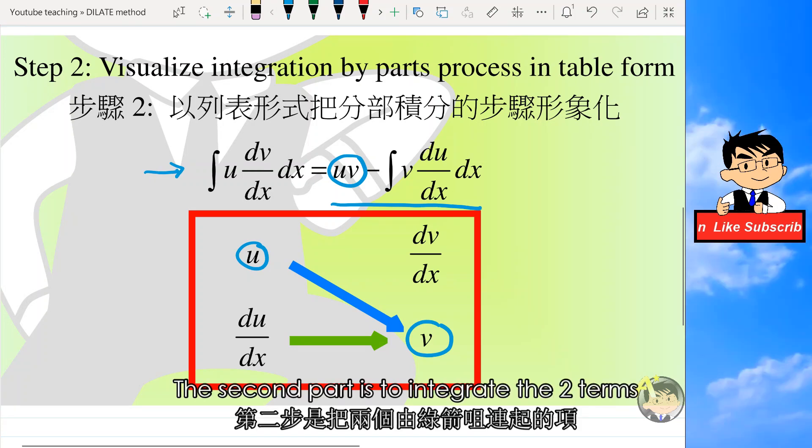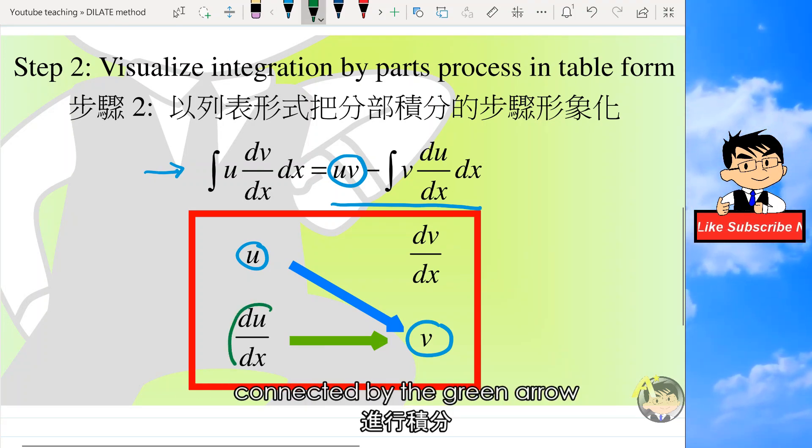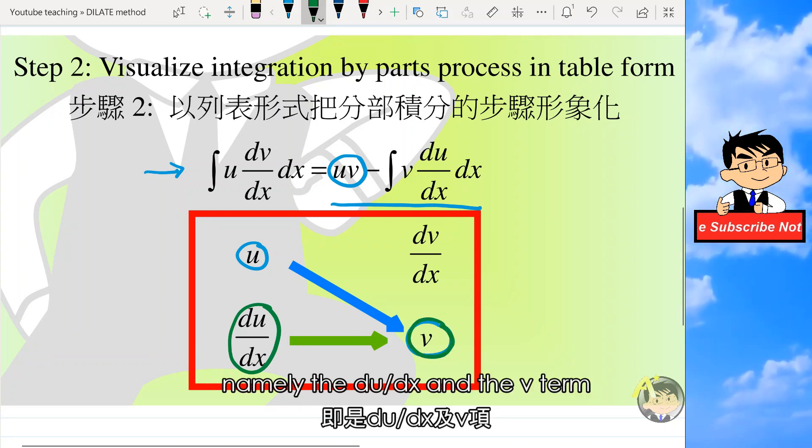The second part is to integrate the two terms connected by the green arrow, namely the du over dx and the v term.